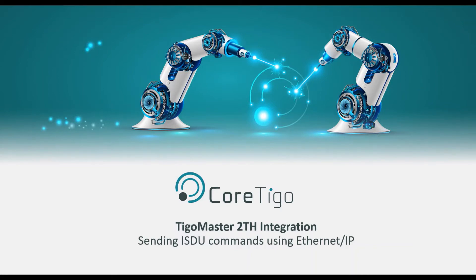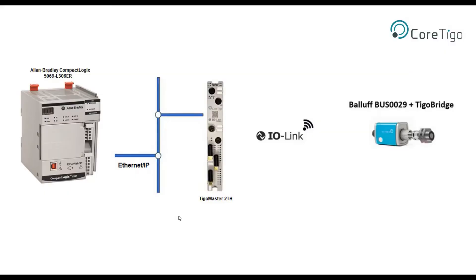In this video, we will demonstrate how to send ISDU commands using Ethernet IP to TIGOMaster2TH. In the following example, we will use an ISDU command to a BALUF proximity sensor, which is connected wirelessly to our TIGOMaster. We will use an Allen Bradley PLC connected to TIGOMaster2TH and communicate using the Ethernet IP protocol.